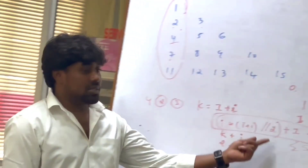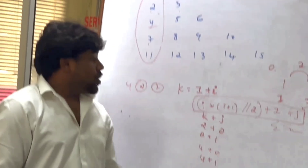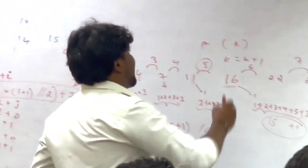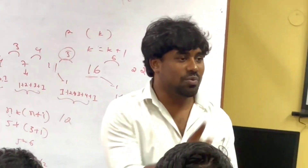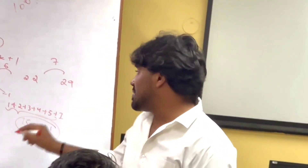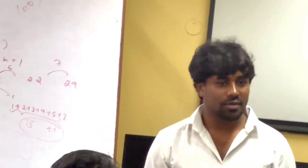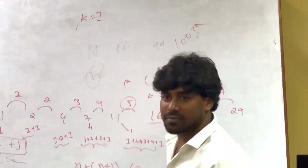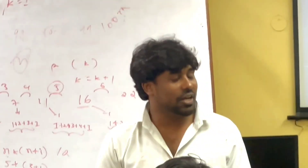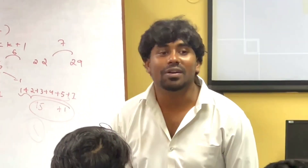What is the point of writing this equation? If the user tells you they want the 100th number, you can write only this equation. This equation will run only one time — O(1). Normally if you want to do it the other way, to find the 100th term you need to know the 99th, for the 99th you need the 98th, and so on — you must start from 1, meaning it runs n times. But if you write the equation, it will come directly. You will get the answer.